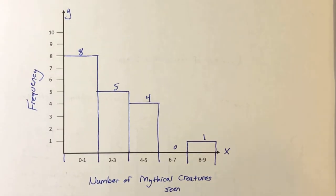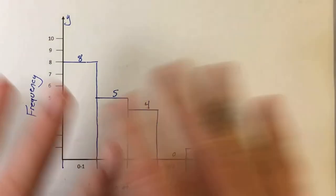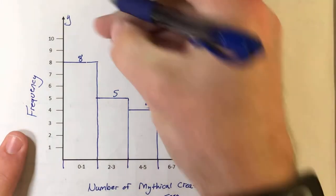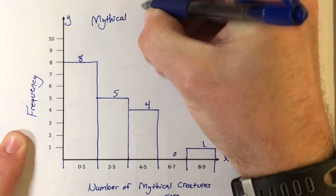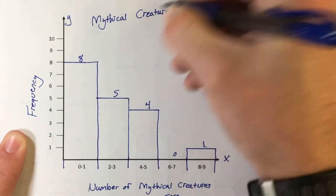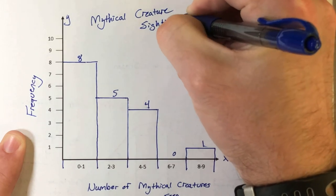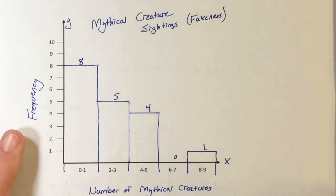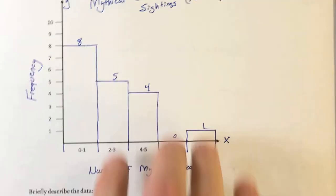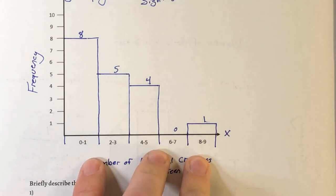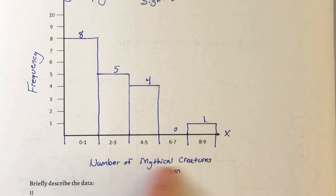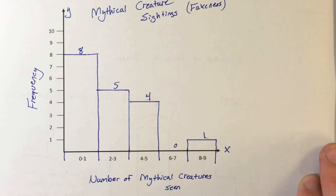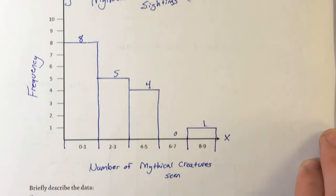What are we missing? We've got our bars, our numbers, our axis titles. We need a primary title. What is this about? It's about mythical creature sightings. Your primary title is going to closely match your x-axis title — essentially what it's about but with a bit more specifics. This is primarily the number of sightings or the number of creatures seen. Now let's interpret what this means — we're going to briefly describe the data.